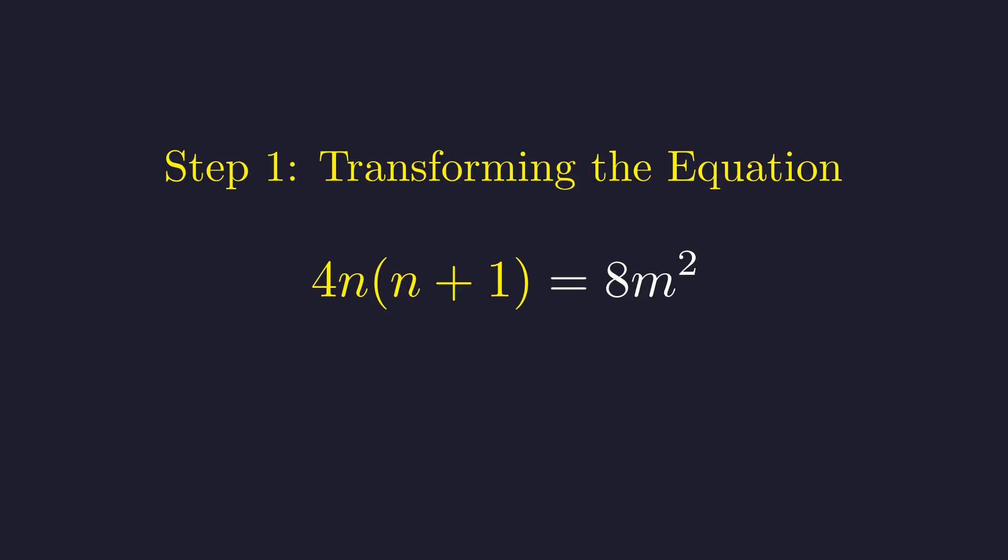Now, let's distribute the 4n on the left side. This gives 4n squared plus 4n. The expression on the left is very close to a perfect square. To complete it, we need to add 1 to both sides. Adding 1 to both sides maintains the equality. The left side is now the square of 2n plus 1. This simplification is the key insight.